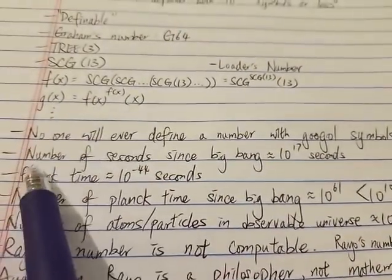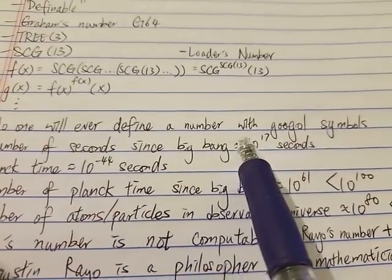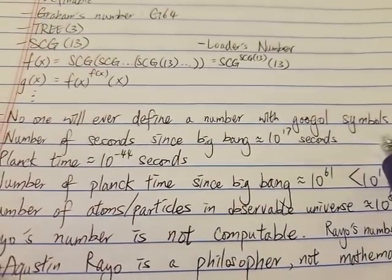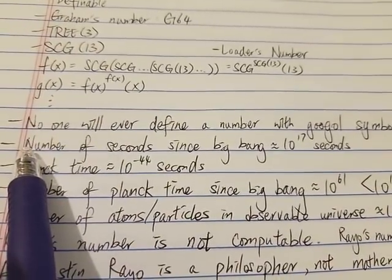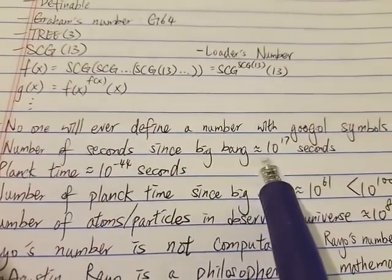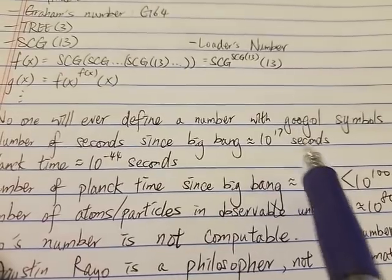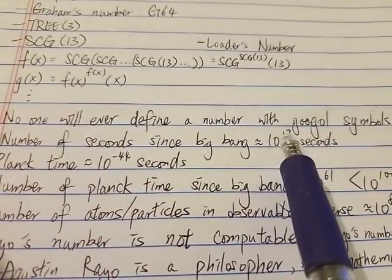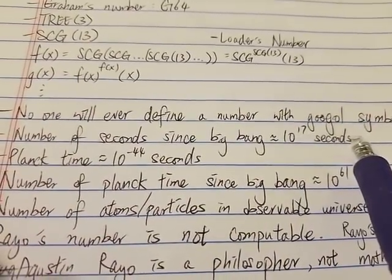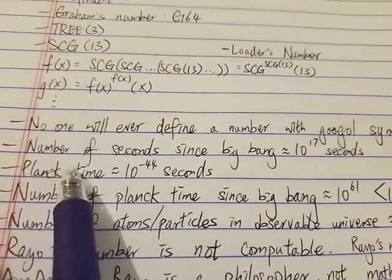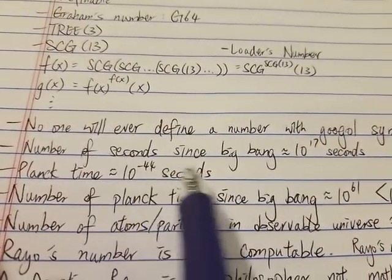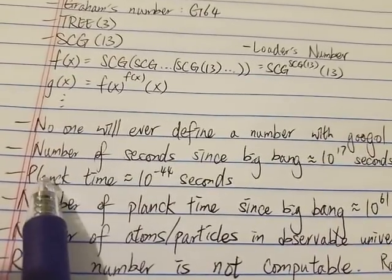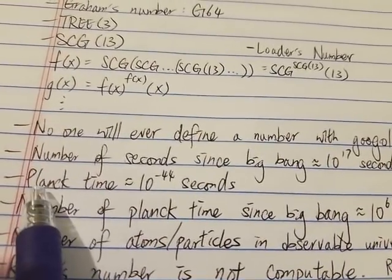It's safe to say that no one will ever define a number with a googol symbols. Why? Because the number of seconds since the Big Bang is around 10^17 seconds, which is one followed by 17 zeros. And let's say a person or even a computer can write at the fastest speed possible, which is one symbol per Planck time.